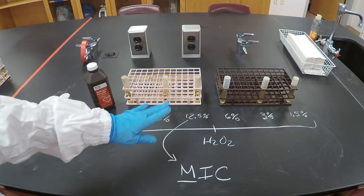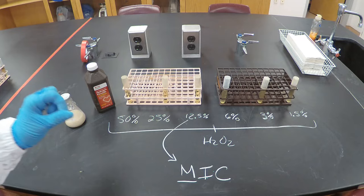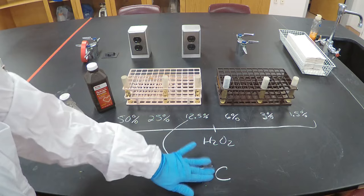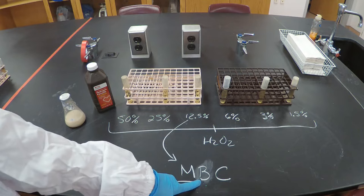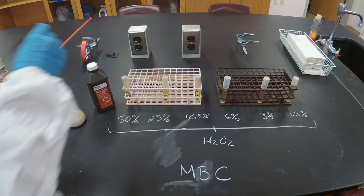Interestingly, just because 12.5% hydrogen peroxide stopped the bacteria from growing doesn't mean the bacteria in that tube are dead. To determine what percent of hydrogen peroxide is necessary to actually kill the bacterial cells, we need to talk about minimum bactericidal concentration — also sometimes called minimal lethal concentration — but let's stick with minimum bactericidal concentration.